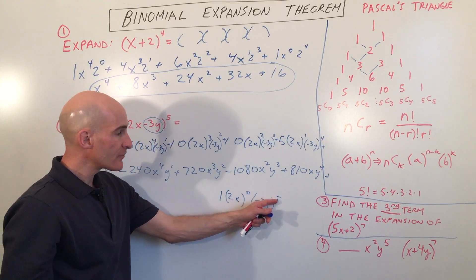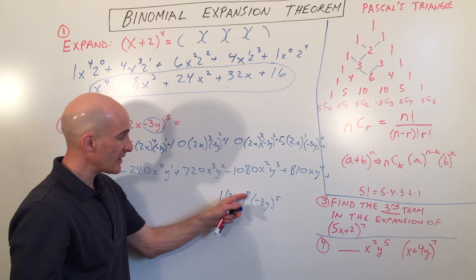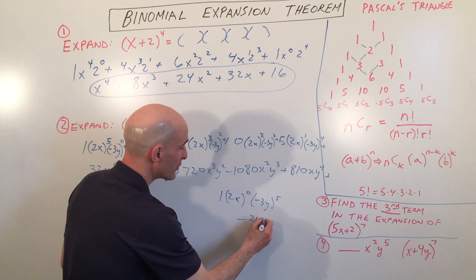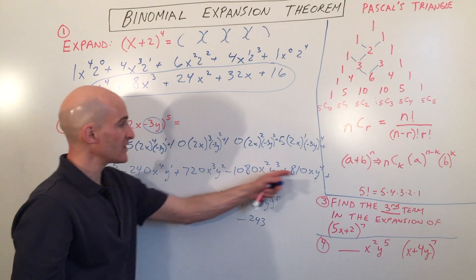Plus negative 3 to the fifth is negative 243. Anything to zero power is 1. So for our last term, we get negative 243. So we fully expanded that.